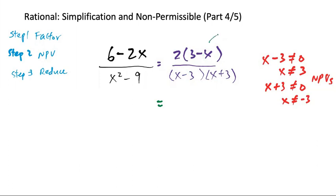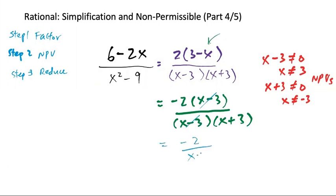So we need to rearrange the first one. So we can factor out the negative 1, so that we get x minus 3. So now the top and the bottom, they are the same, so we can cross them out now. So cross and cross. And then we have negative 2 over x plus 3.